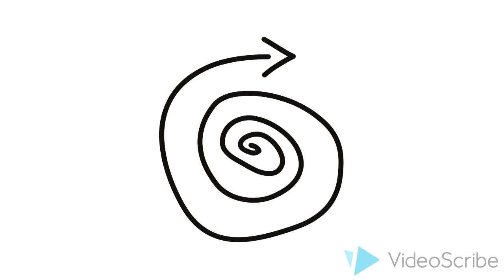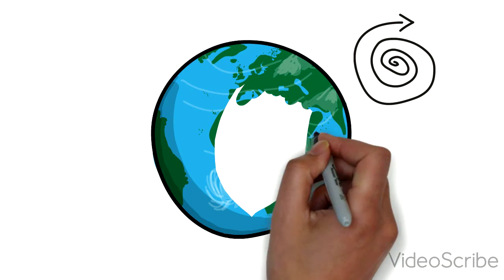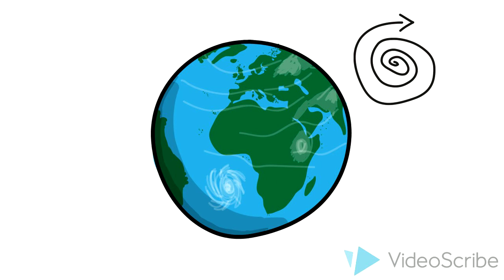These cells, in conjunction with the Coriolis effect, which is caused by the rotation of the Earth, direct wind movement, which in turn controls heat and water distributions globally.